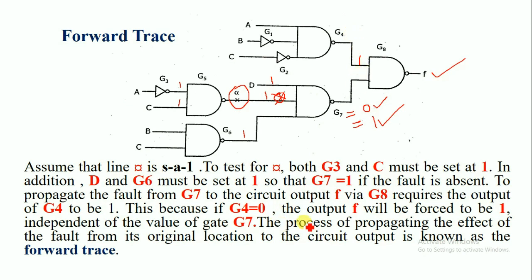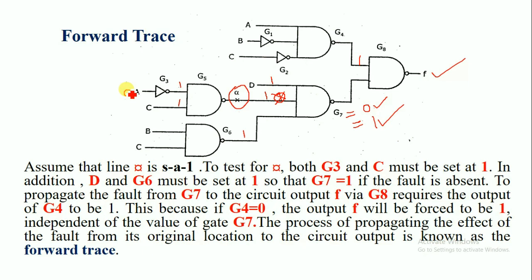The process of propagating the effect of the fault from its original location to the circuit output is known as the forward trace. By this, the stuck-at-1 fault will be propagated to output F. If the output of gate G3 equals 1, then input A must equal 0, and C must equal 1.